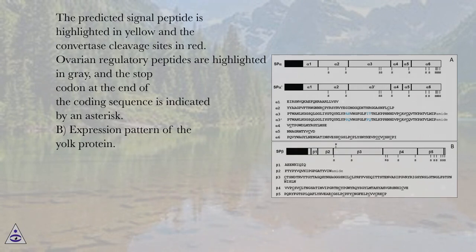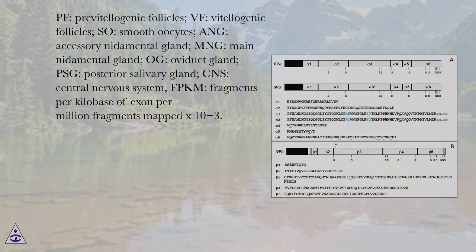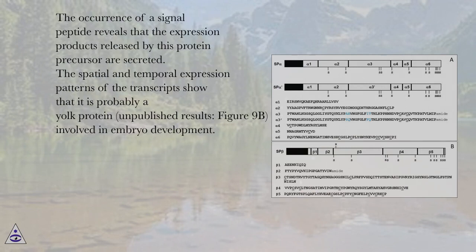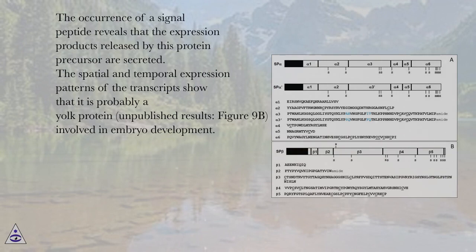Expression pattern of the yolk protein (figure 9b): PF, provitalogenic follicles; VF, vitalogenic follicles; SO, smooth oocytes; ANG, accessory nitimental gland; MNG, main nitimental gland; OG, oviduct gland; PSG, posterior salivary gland; CNS, central nervous system; FBKM, fragments per kilobase of exon per million fragments mapped ×10⁻³. The occurrence of a signal peptide reveals that the expression products released by this protein precursor are secreted. The spatial and temporal expression patterns of the transcript show that it is probably a yolk protein (unpublished results, figure 9b) involved in embryo development.